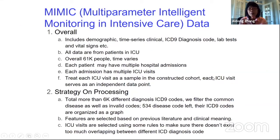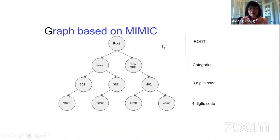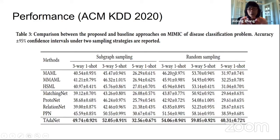We first experimented with MIMIC, a famous disease dataset with ICD-9 codes, which is more diverse than TCGA. The disease ICD-9 codes — with three-digit and four-digit codes — can be organized into different categories. This prior knowledge can be incorporated into the machine learning model to make better predictions. This work is going to be presented at the KDD conference next week.